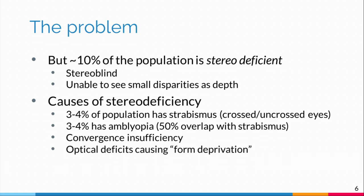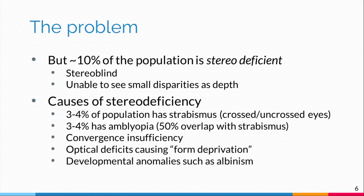Optical deficits that cause form deprivation in one or both eyes, such as cataract, are also causes. Developmental anomalies such as albinism — a person who is albino often does not have a decussating optic chiasm, so they send information from one eye to one hemisphere and the other eye to the other hemisphere, rather than sending everything from the left visual field to the right hemisphere and everything from the right visual field to the left hemisphere.